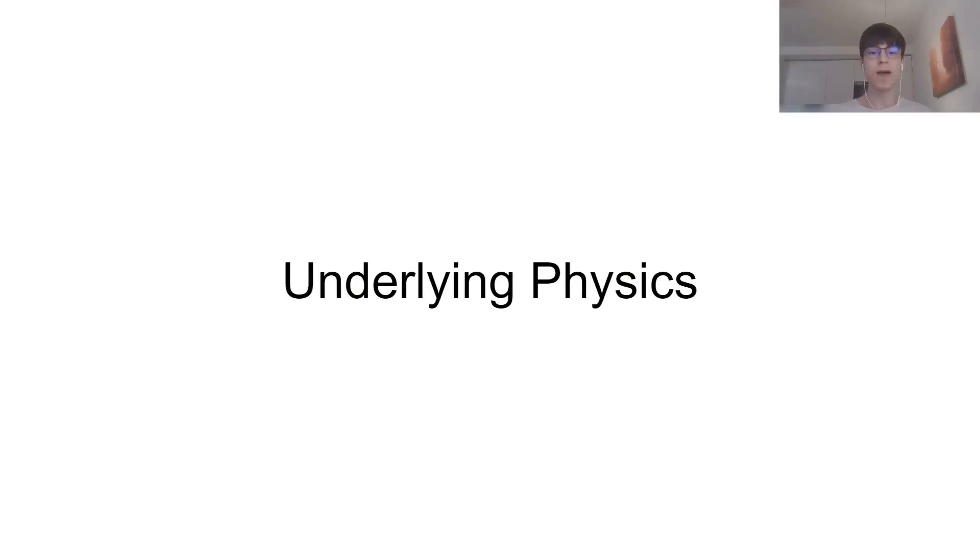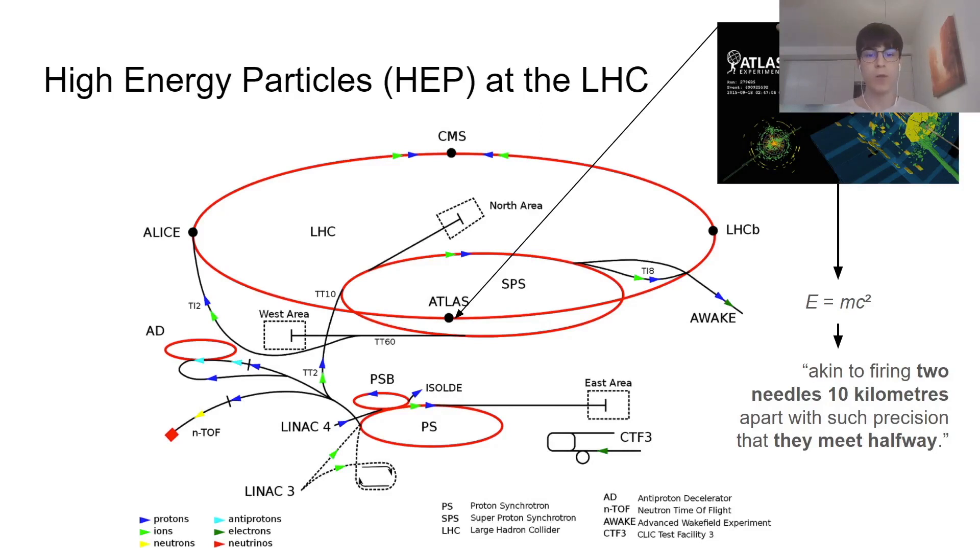When dealing with data measuring proton-proton collisions at the Large Hadron Collider, or LHC in short, we must consider the unique conditions under which these physical events happen. Differently from our observable world, where matter is measured in kilograms and energy is not densely packed, particle collisions at CERN take physics from the classical perspective into the relativistic one.